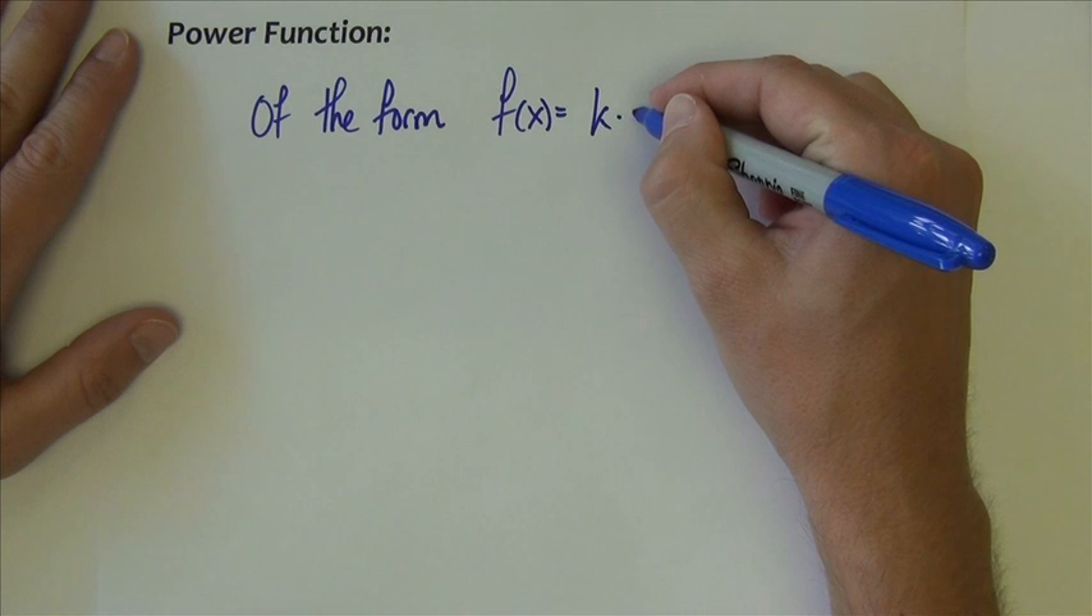A power function is one that is of the form f of x equals k times x to the a power, where a and k are just simply non-zero constants. We call k the constant of variation.